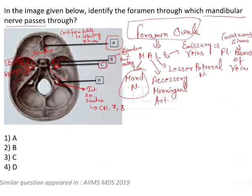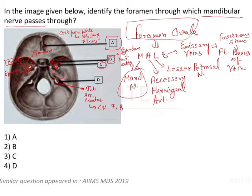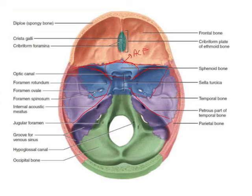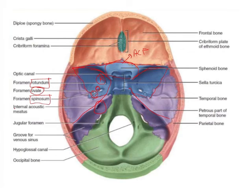Looking at it freshly in a better view: this is going to be your sphenoid bone, this is the lesser wing of the sphenoid bone which is part of the anterior cranial fossa. This is the middle cranial fossa, where the greater wing of the sphenoid is. Here R is foramen rotundum for maxillary nerve, O is foramen ovale, S is foramen spinosum, and this is your internal acoustic meatus giving passage to the 7th and 8th cranial nerves.